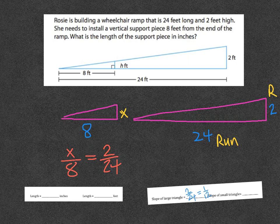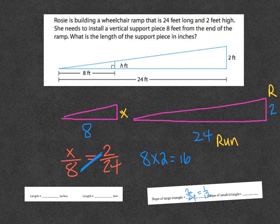Well, that's not a whole number, so it may not be easy for you to figure out on your own. But what I can do is multiply these two together. 8 times 2 is 16. And then after I do that, I'm going to divide by 24, and my answer will be what this is supposed to be - the height of that support beam.